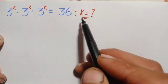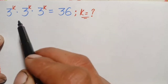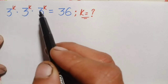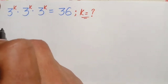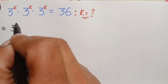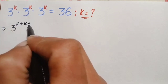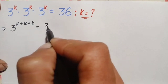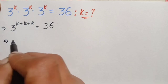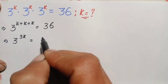We need to find the value of the unknown k. Looking at the left hand side, the base is the same, so we add the powers. Writing the base 3 once and adding the power k three times gives us 3 raised to power 3k, which equals 36.